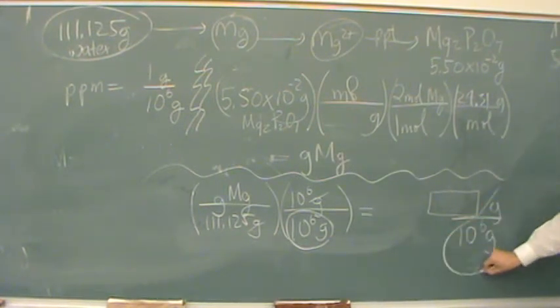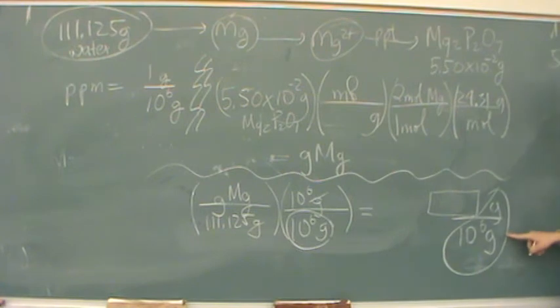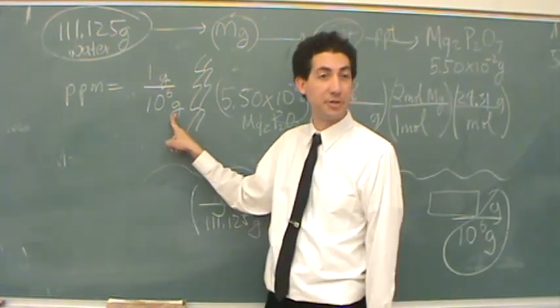So now this unit right here is PPM. That's PPMs. Grams over a million grams. But I told you before, grams over a million grams is PPM.